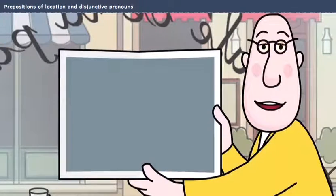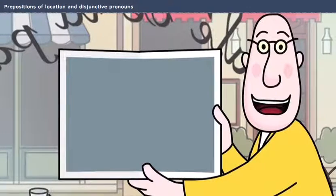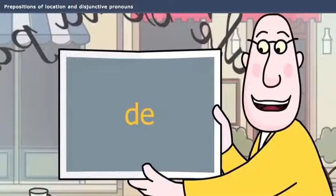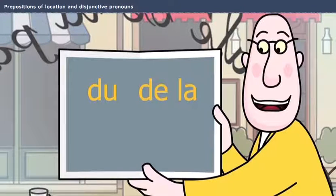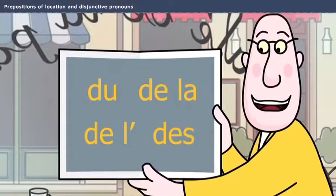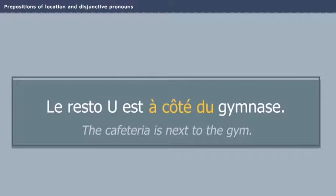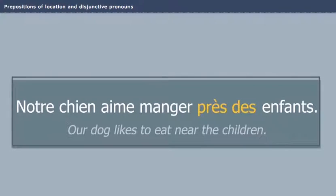Attention! When prepositions that end in de are followed by a definite article, use du, de la, de l'apostrophe, and des. Le resto U est à côté du gymnase. Notre chien aime manger près des enfants.